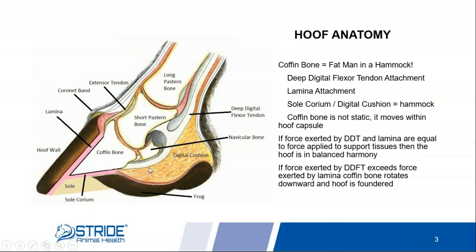This deep digital flexor tendon is very large and very capable of applying an awful lot of tension and pressure on that coffin bone. So if you think of this as a hammock, that deep digital flexor tendon is one of the strings that attaches the hammock to the tree. The other string is going to be the lamina, attached to the front of the coffin bone. The hammock itself will be the sole corium right underneath the tip of the coffin bone and then the digital cushion.